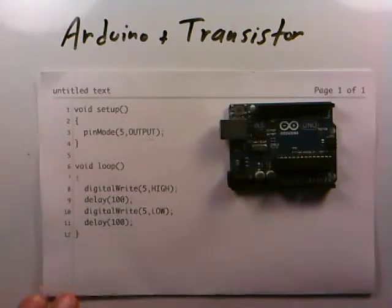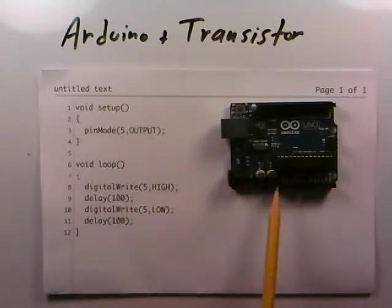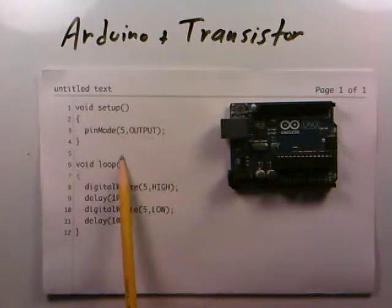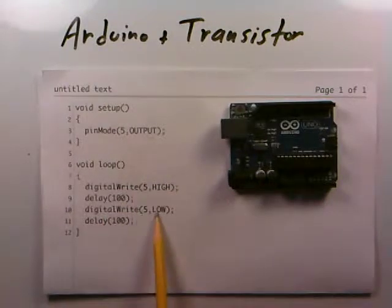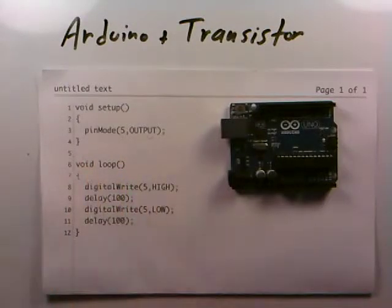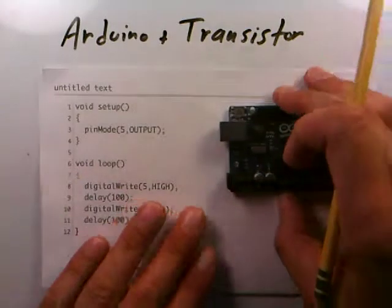We have a simple code already loaded into this Arduino. We set pin 5 to be an output pin on the digital pins. In the main loop, which executes over and over again, we make pin 5 high, delay a tenth of a second (100 milliseconds), make it low, then delay another tenth of a second. So we get a high, a delay, a low, a delay, and back to high again.